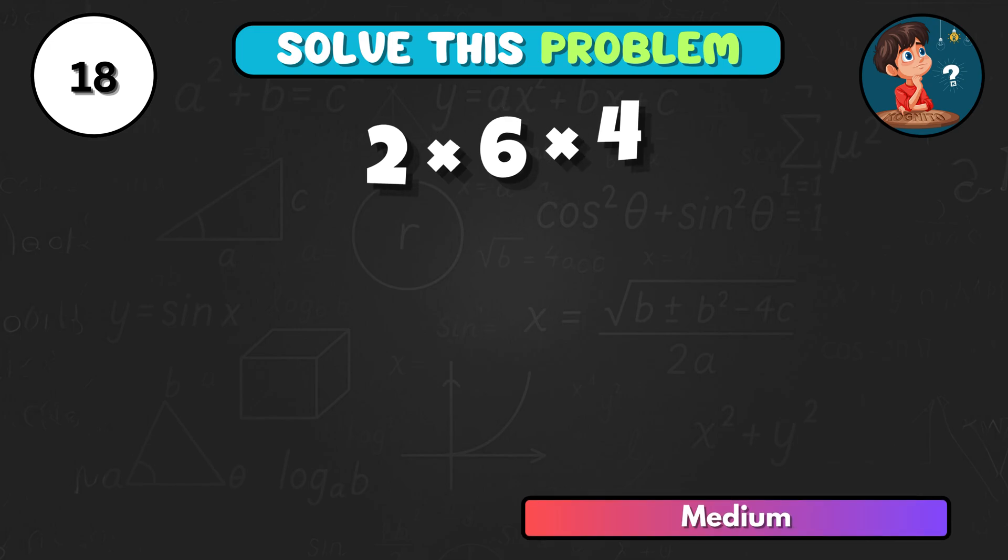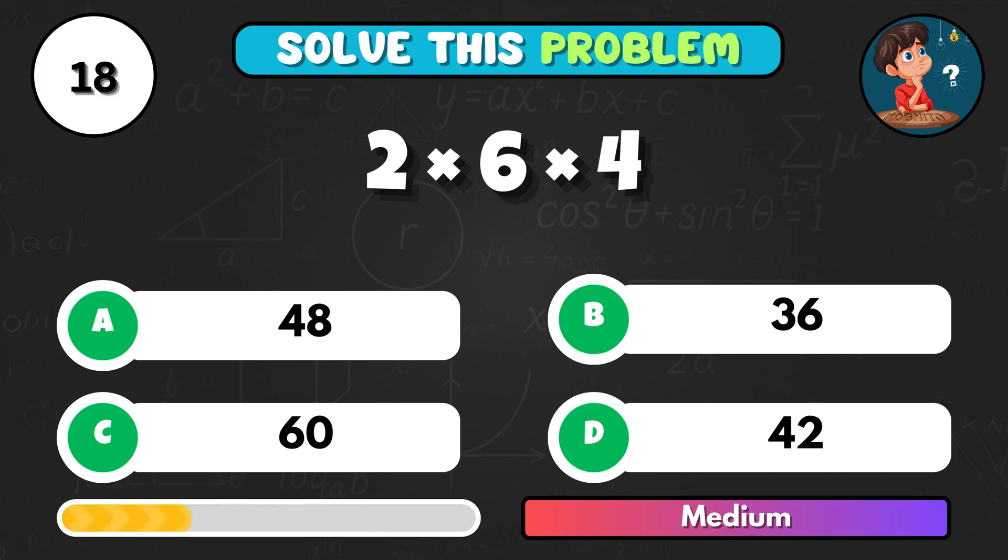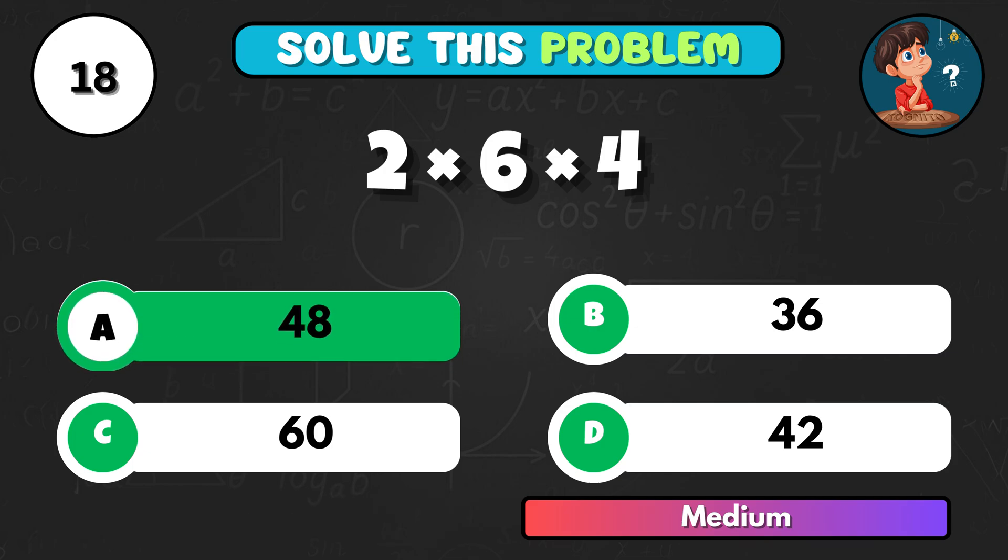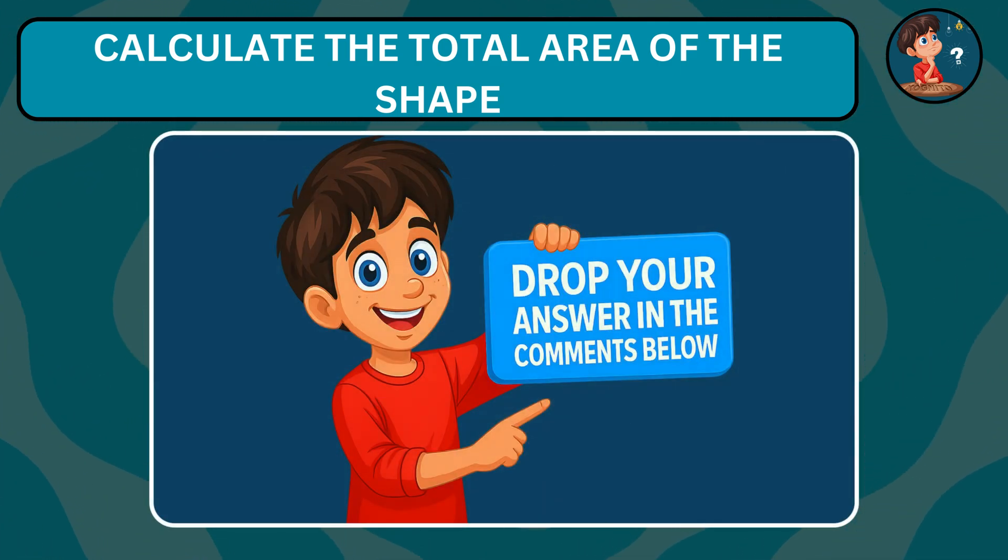A little speed math. 2 times 6 times 4. It equals A, 48. Remember this shape. Now, can you calculate the total area of the entire figure? Drop your answer in the comments.